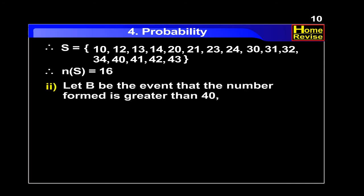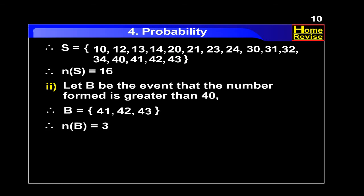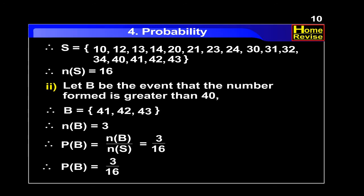Number 2. Let B be the event that the number formed is greater than 40. Therefore, B is equal to: 41, 42, 43. Therefore, n of B is equal to 3. Therefore, probability of B is equal to n of B upon n of S, which is equal to 3 upon 16.